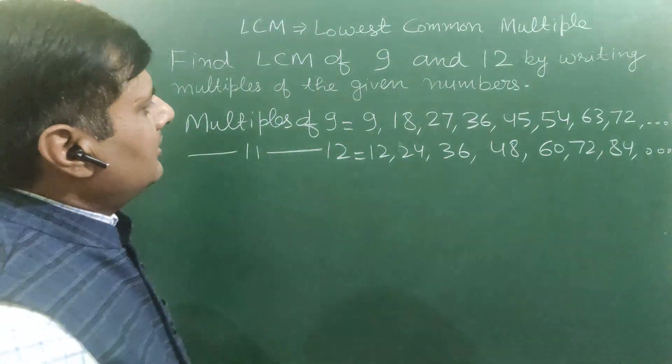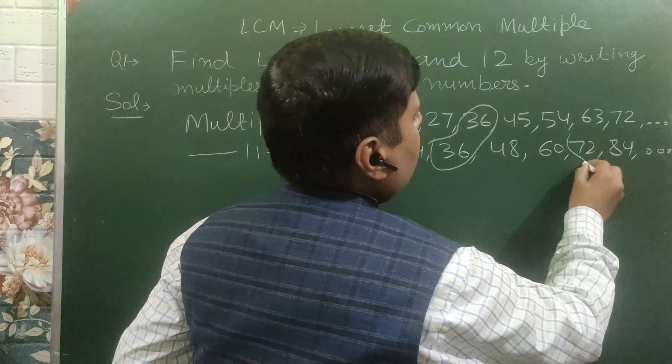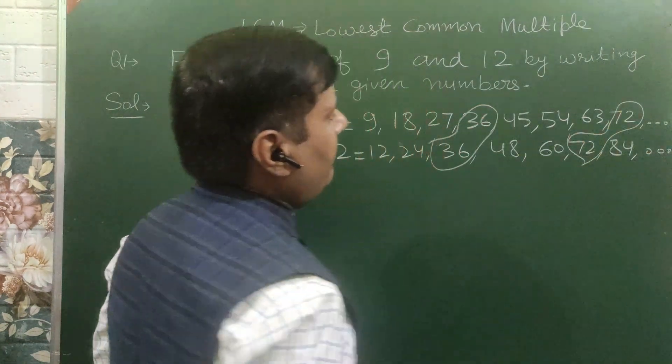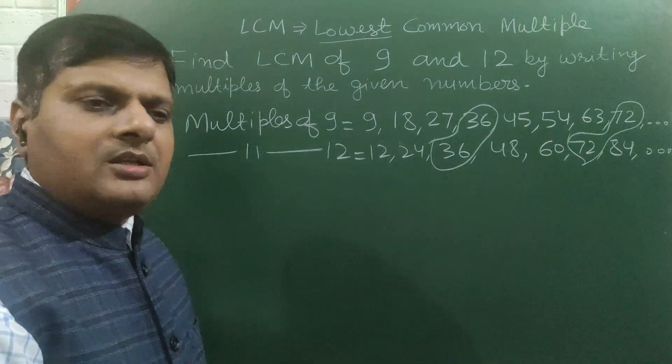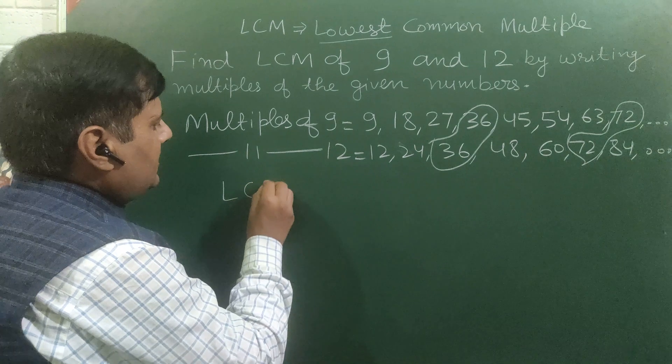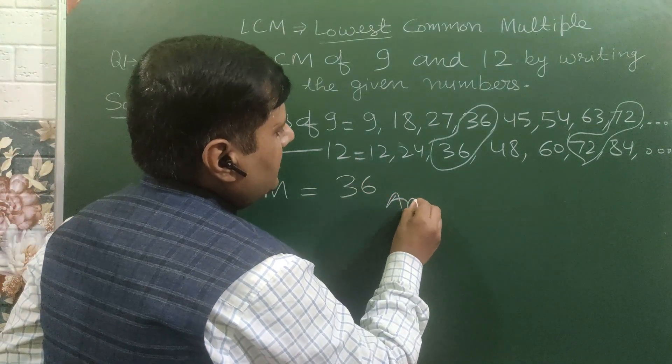You just see, what are the numbers common: 36 is common, again 72 is common, but we have to find lowest common multiple. So LCM is equal to 36, it is our answer.